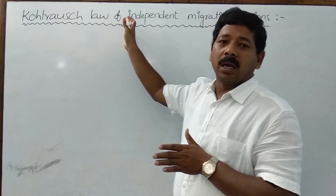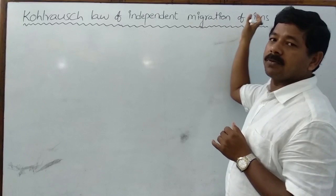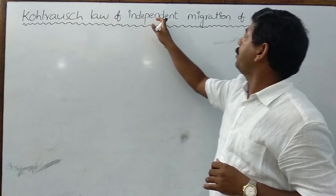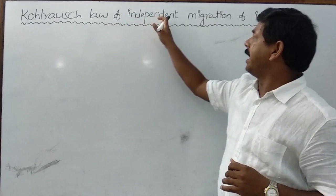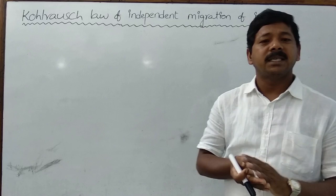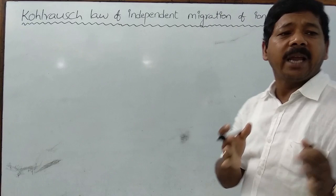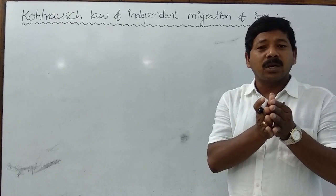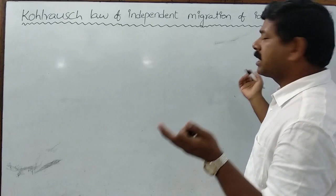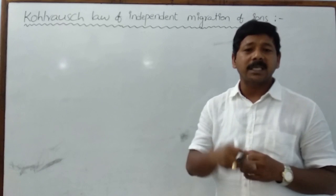For weak electrolytes, there is another concept: Kohlrausch's Law of Independent Migration of Ions. This law is useful to determine molar conductances of weak electrolytes at infinite dilution. It is based on the concept that at infinite dilution, the electrolyte undergoes complete dissociation, and whatever ions are formed each makes some contribution to conductivity.